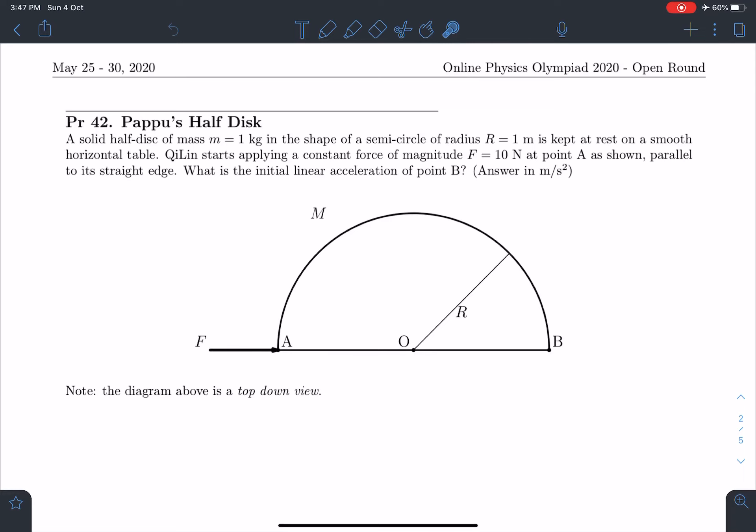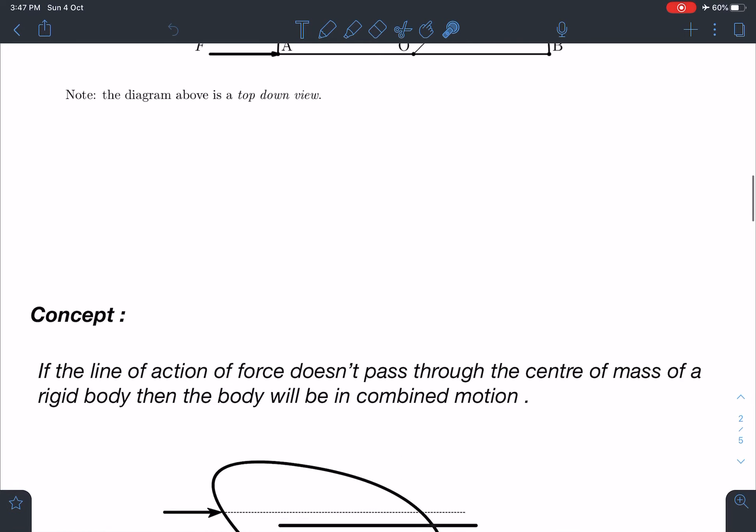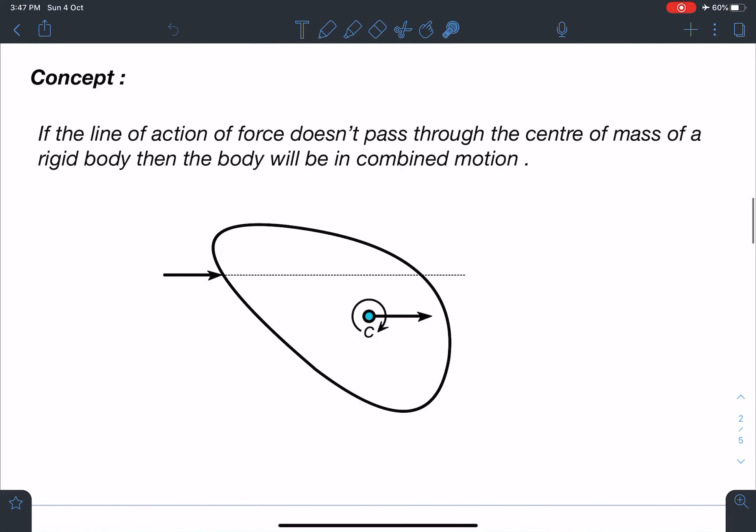Let's discuss the concept part. It's a simple problem, yet people make mistakes. The concept here is: if the line of action of force doesn't pass through the center of mass of a rigid body, then the body will be in combined motion. That means there is going to be some linear acceleration to the center of mass, and the body will be rotating about an axis passing through the center of mass if the body is free to rotate.